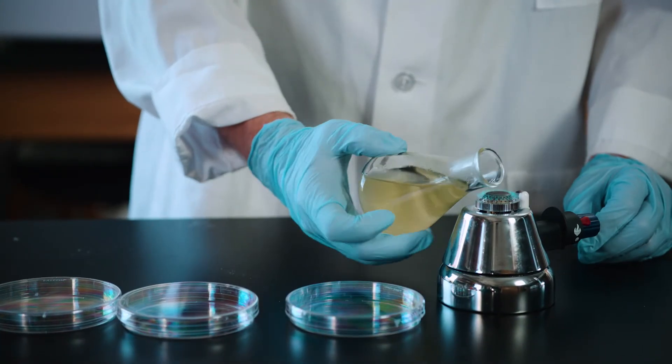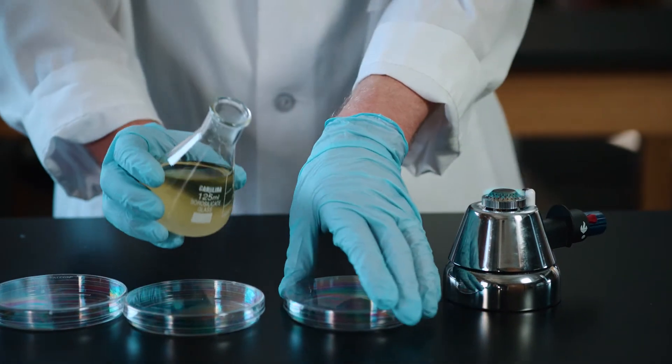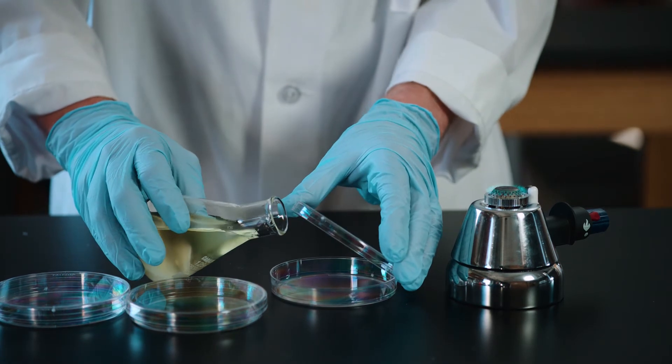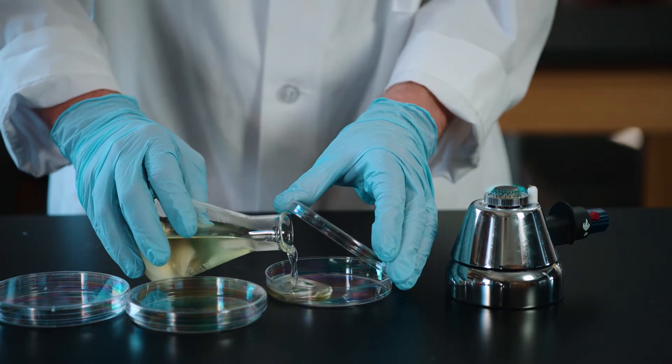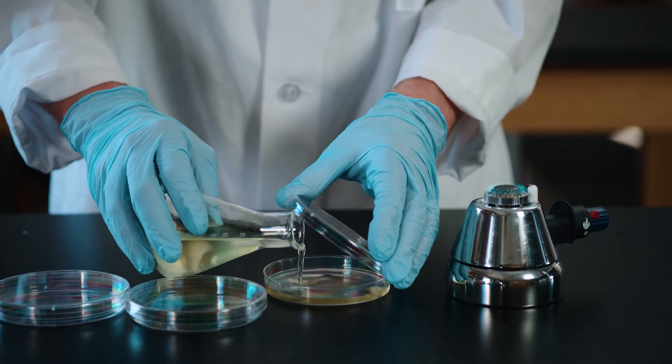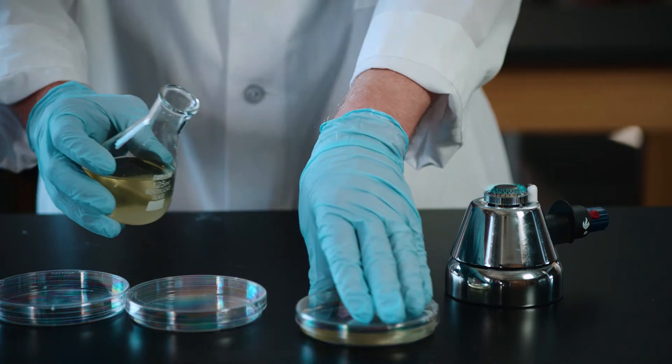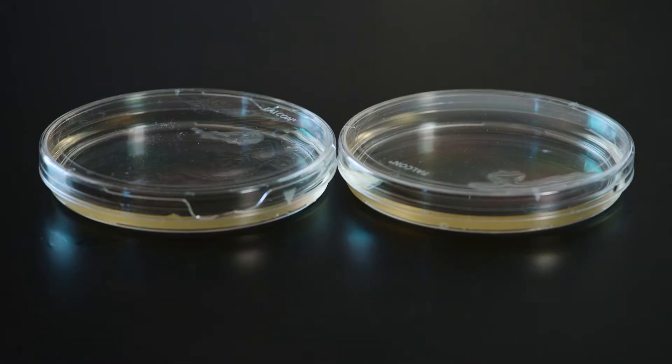Before pouring, flame the lip to sterilize the flask and follow sterile technique throughout pouring. Pour or dispense 20 milliliters of media into each petri plate. Allow the plates to solidify. They can now be used immediately or stored at 4 degrees Celsius until needed.